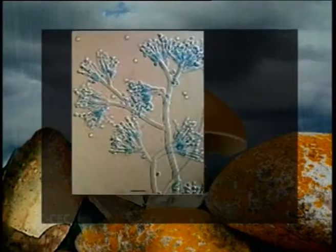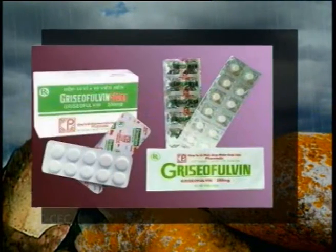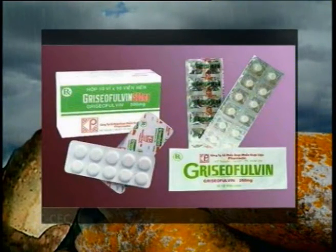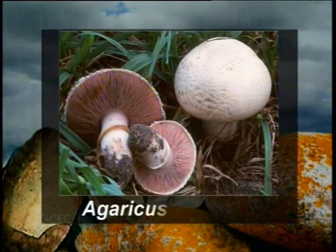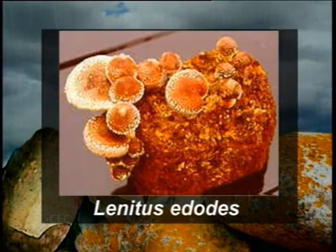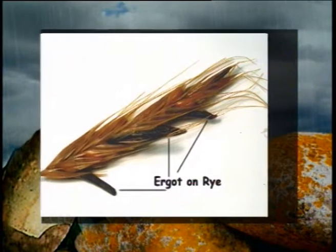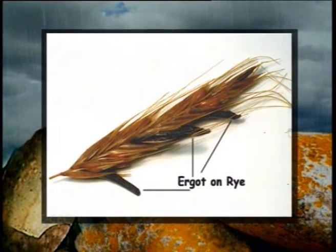Fungi even make lethal antibiotics against other fungi. For example, Penicillium chrysogenum produces the antibiotic chrysogenin, which is used to treat fungal infections. Many edible mushrooms like Agaricus bisporus and Lentinus edodes possess anti-tumor properties and also lower blood cholesterol. Another important drug obtained from fungi is ergot, prepared from the sclerotia of Claviceps purpurea, a fungus which parasitizes rye crops.